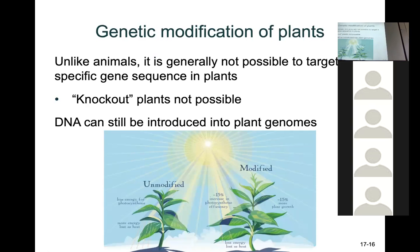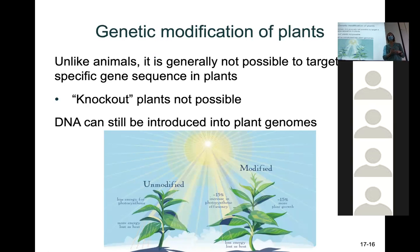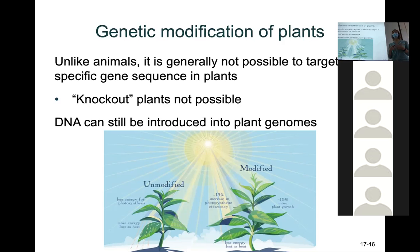Plants are actually tougher to modify than you might think. They have a lot of repeated DNA and sometimes have more than two copies of DNA, which makes modification complicated. You can't do knockout plants — it's not really possible to totally knock out a gene because of their complex genome. You can still introduce DNA into plant genomes, which is a lot of what's been done to make tougher or more productive plants.